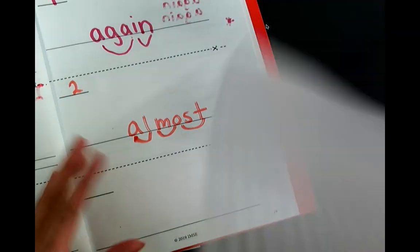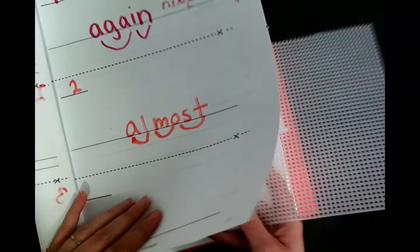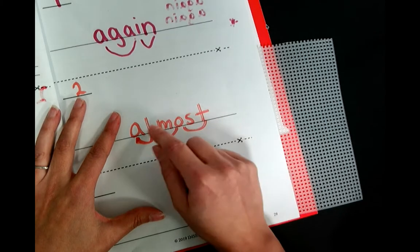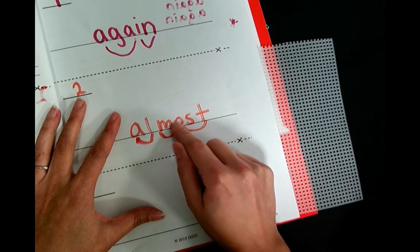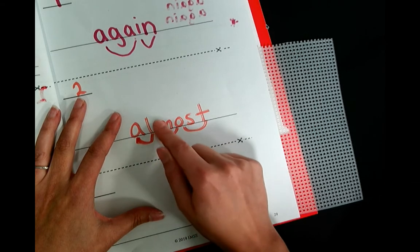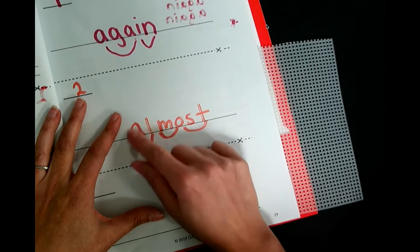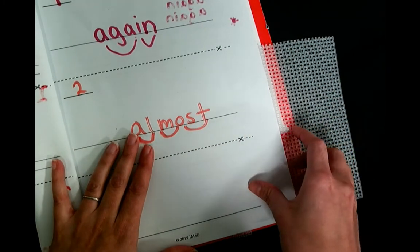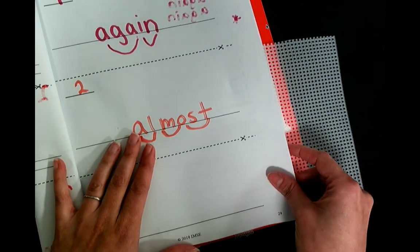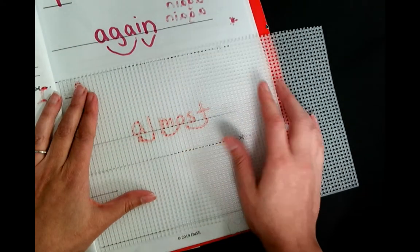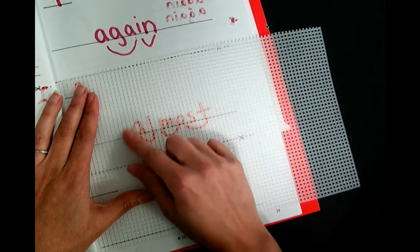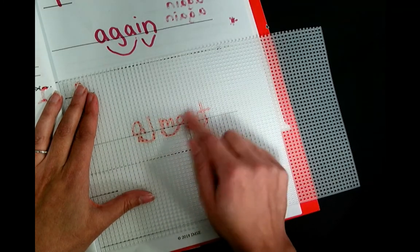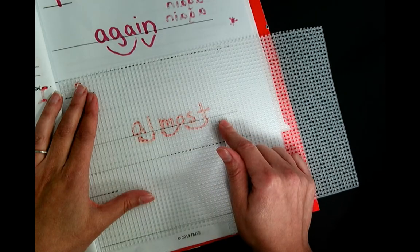Now, let's trace it. Go ahead and stick your screen under your paper and trace it three times. And spell it as you go. Almost. Almost. Almost. Now, you are going to put your screen on top so you can just see it. Or you can test yourself and see if you can do it without looking. Almost. Almost. Make sure you are spelling it.